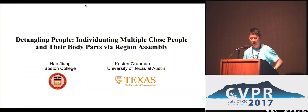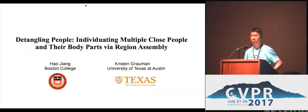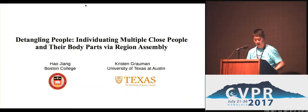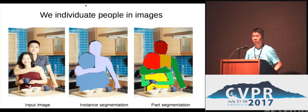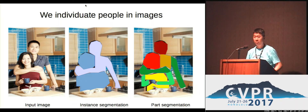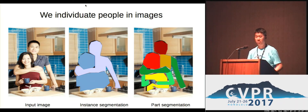Hi, this is Hao Jiang from Boston College, and this is a joint work with Kristen Grauman from UT Austin. Our task is to detangle multiple people in images. Given the input image, we want to find the instance segmentation and also the body part segmentation as well.